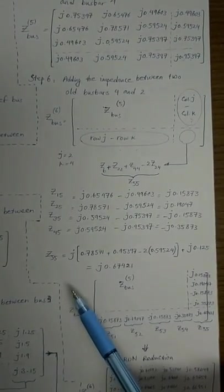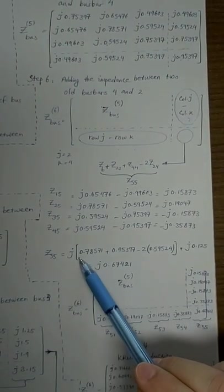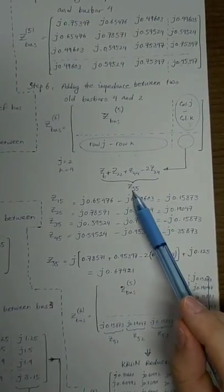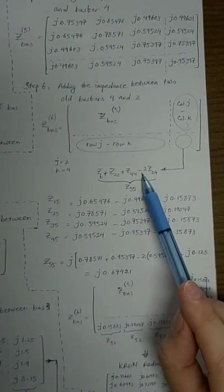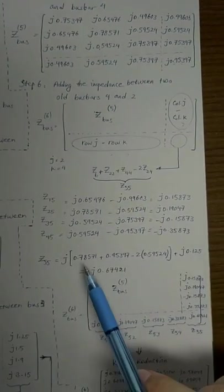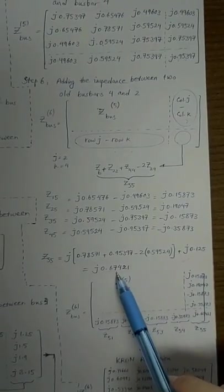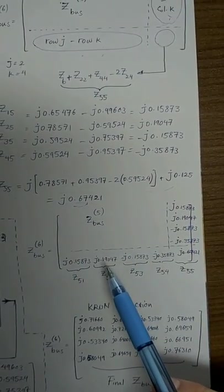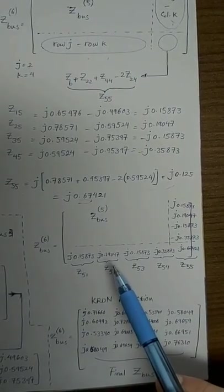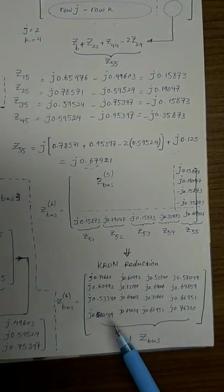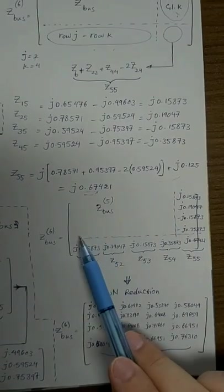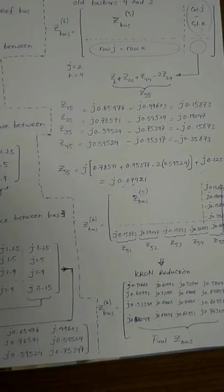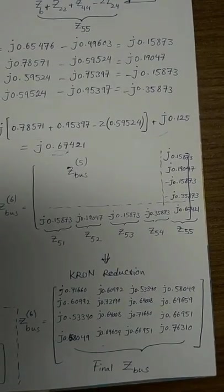The only remaining parameter is Z₅₅, which equals Z_B + Z_JJ + Z_KK − 2·Z_JK, that is Z_B + Z₂₂ + Z₄₄ − 2·Z₂₄. We calculate everything and reach the value J0.6742. Based on this, we create a new 5×5 matrix. We then implement Kron reduction over the fifth row and fifth column, and after that we arrive at the final Z-bus value for this example.